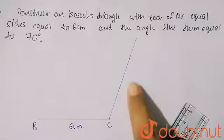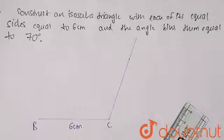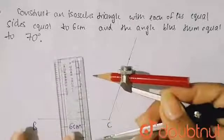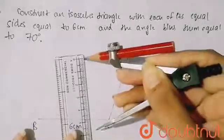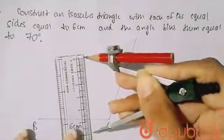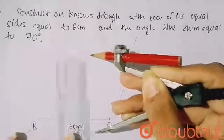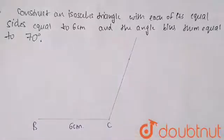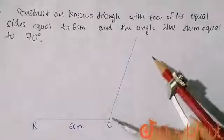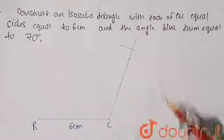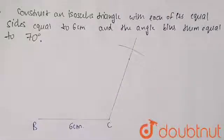On this line, I will measure six centimeters and mark it. You can see here that I am measuring six centimeters. By putting the compass at point C, I will cut an arc here.